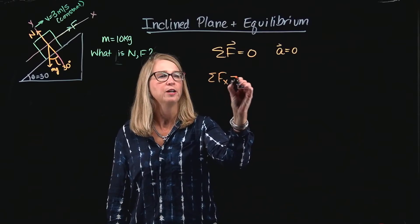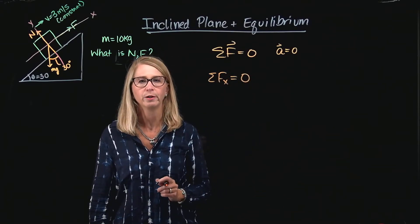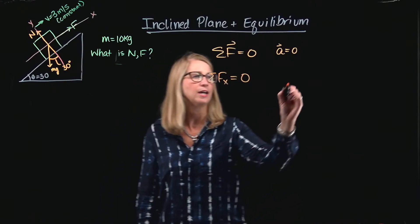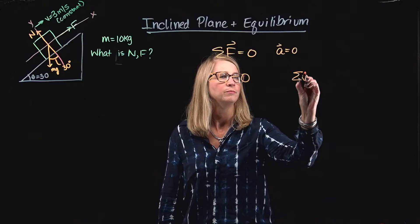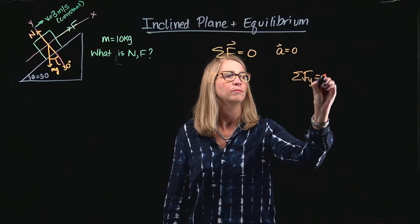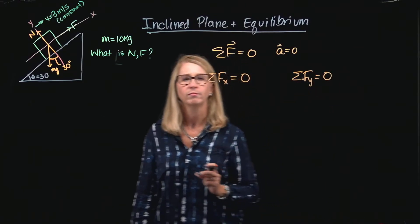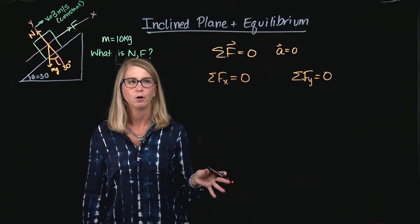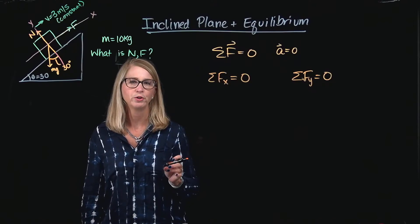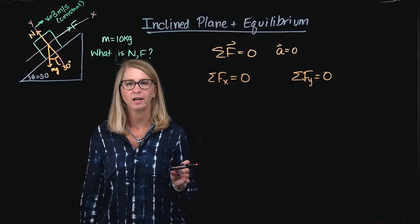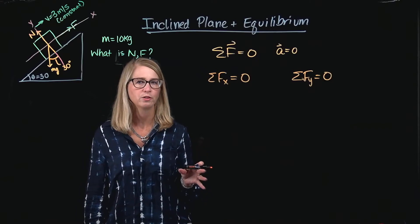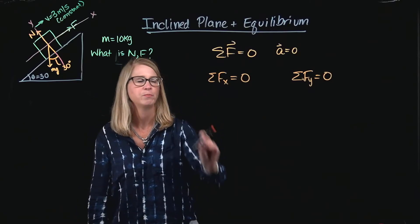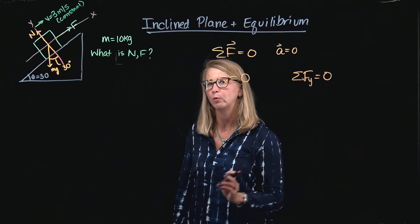So, we're going to break down the condition for equilibrium, which is the sum of the forces add up to be zero. We'll break it down into x and y components. Now, we already know that the right-hand side of these expressions are zero. Our job is to substitute in for the left-hand side what the forces are, or components of forces that are in the x direction if I'm doing this expression, or for the y direction if I'm working on this one.